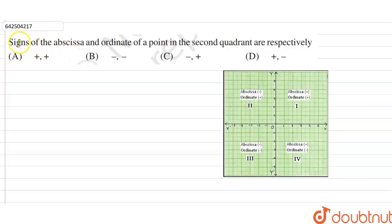Hi students, our question is, signs of abscissa and ordinate of a point in second quadrant are respectively. Firstly let's understand the concept.